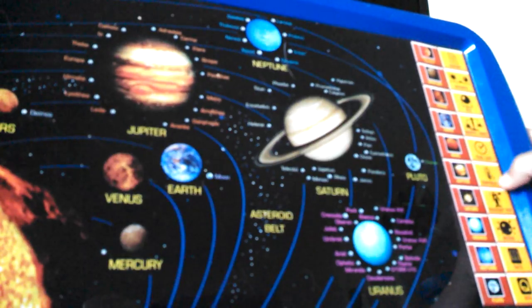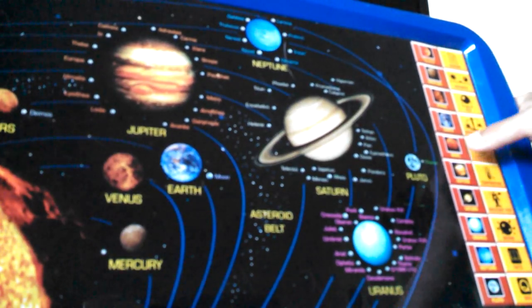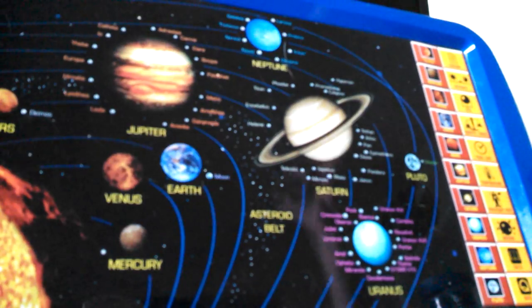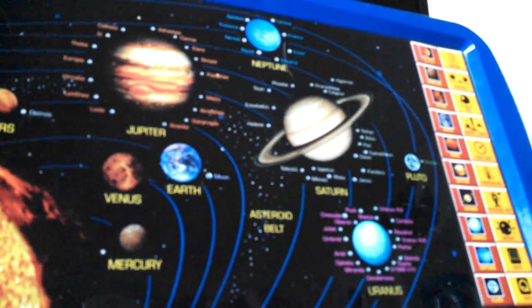This is the planet Jupiter. Jupiter is 480 million miles away from the Sun, or more than 5 times the distance between the Earth and the Sun.